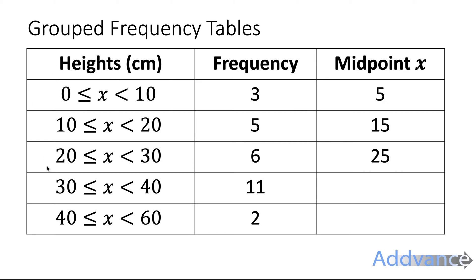To work this out you just do the smaller number plus the bigger number and divide by 2. 30 plus 40 is 70, divide by 2 is 35. 40 plus 60 divide by 2 is 50.